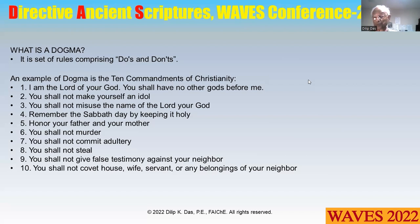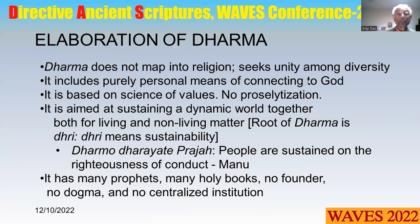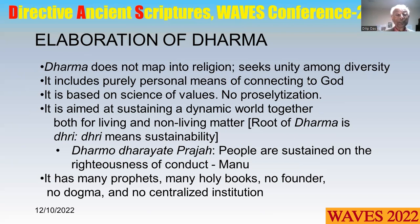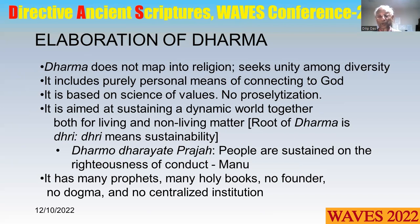Number ten: you shall not covet your neighbor's house, wife, servant, or any belongings. Elaboration of Dharma: Dharma does not map into religion. It seeks unity among diversity. By map, I mean one-to-one correspondence. Dharma includes purely personal means of connecting to God. It is based on a science of values, with no proselytization. It is aimed at sustaining a dynamic world together, both for living and non-living matter. The root of Dharma is dhri, meaning sustainability. As Manu said, 'Dharma dharavatyapraja' — people are sustained on the righteousness of conduct. Dharma has many prophets, many holy books, no founder, no dogma, and no centralized institution.